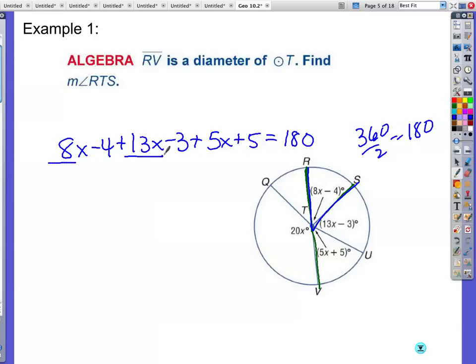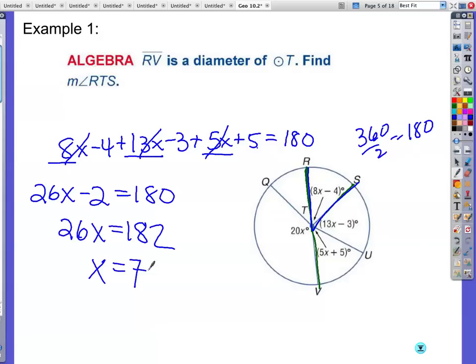So 8x - 4 + 13x - 3 + 5x + 5 equals 180 degrees. Combine my terms. I've got 13 and 13, which is 26x. Negative 4 and negative 3 is negative 7 plus 5, which is negative 2, equals 180. 26x equals 182. Grabbing my calculator. 182 divided by 26 gives me 7.